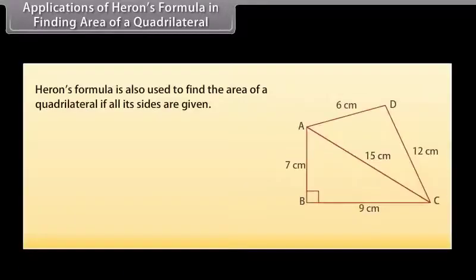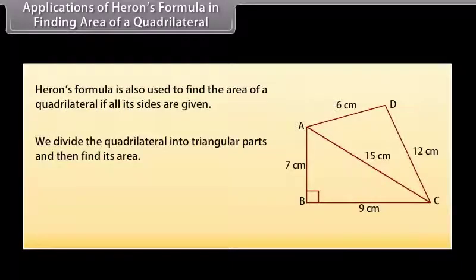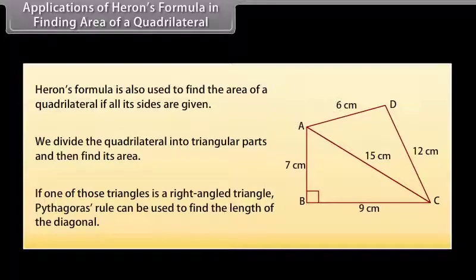Applications of Heron's formula in finding the area of a quadrilateral. Heron's formula is also used to find the area of a quadrilateral if all its sides are given. For that, we divide the quadrilateral into triangular parts and then find its area. If one of those triangles is a right-angled triangle, Pythagoras' rule can be used to find the length of the diagonal. Let us go through some examples.